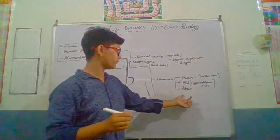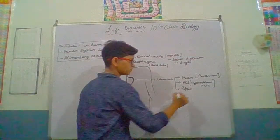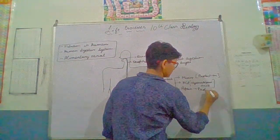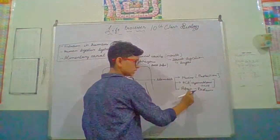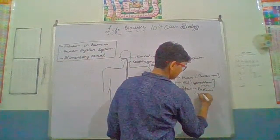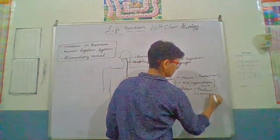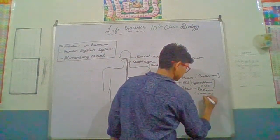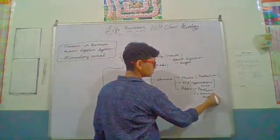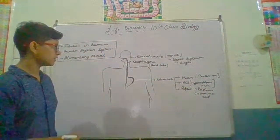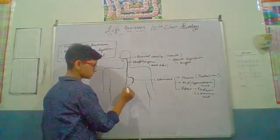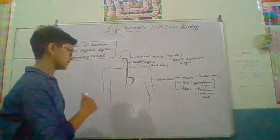Pepsin — P for protein — converts proteins into amino acids. The food is then transported from the stomach into the small intestine.